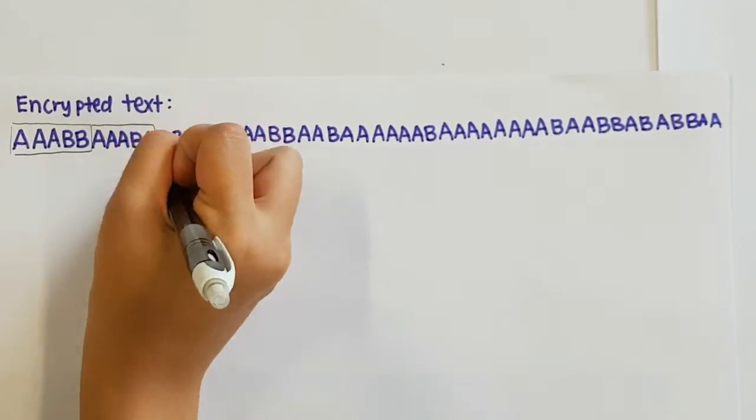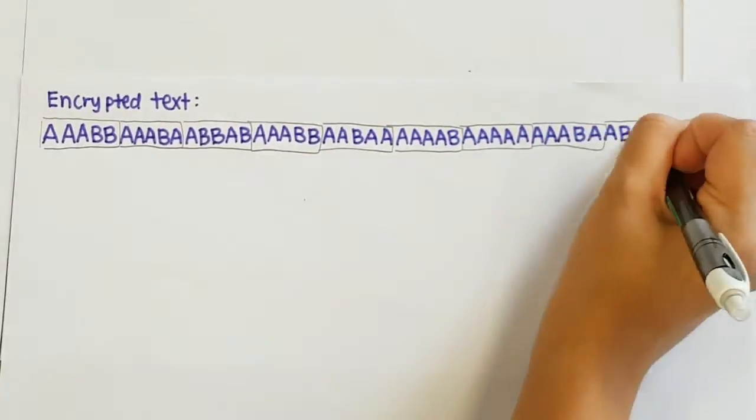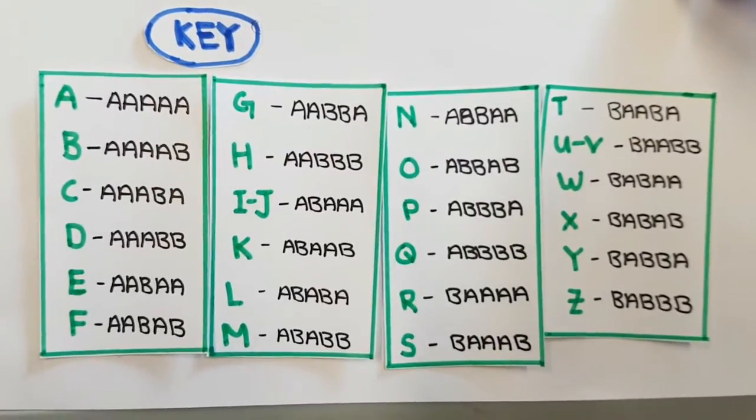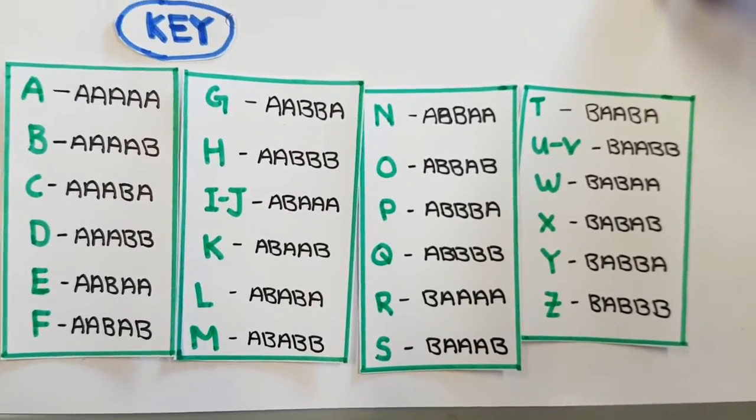So firstly, let's break down the string of letters. Now match the encrypted text to the original text, and the message is decode bacon.